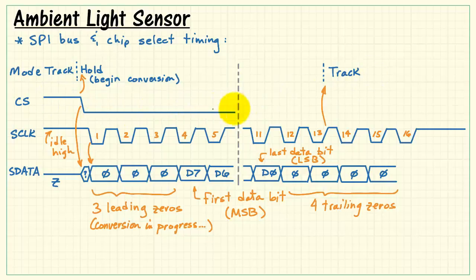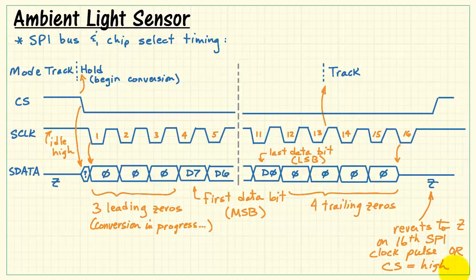All during this time, the chip select has still been low. And then eventually we want to raise that high to prepare for the next conversion cycle. Now notice on this 16th serial clock pulse, we see that the serial data reverts to the high impedance mode.